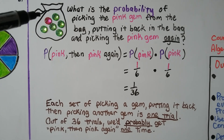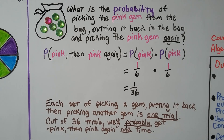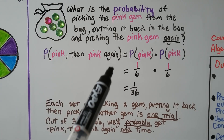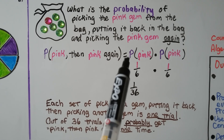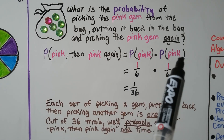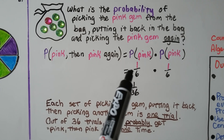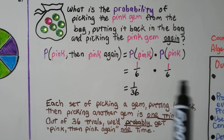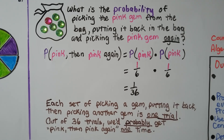Here we have a bag of gems — there are six gems in the bag, but only one is pink. What's the probability of picking the pink gem, putting it back in the bag, and then picking the pink gem again? These events are independent because we're putting it back. So we have the probability of pink times the probability of pink: 1/6 times 1/6 equals 1/36. Each set of picking a gem, putting it back, then picking another is one trial. Out of thirty-six trials, we'll probably get pink then pink again one time — it's not definite, it's the probability that it'll happen.